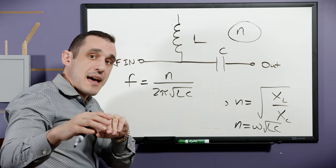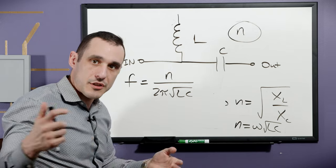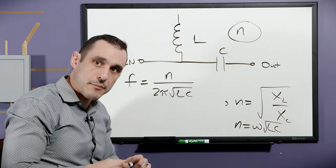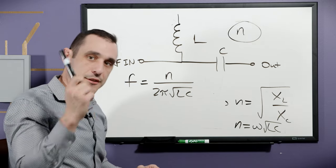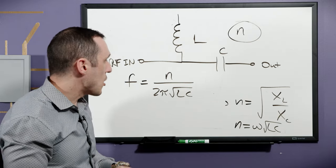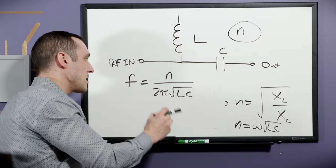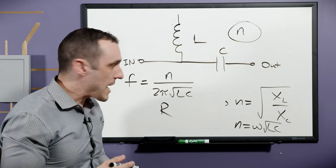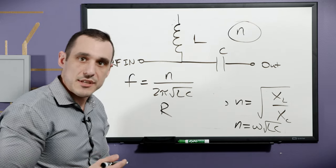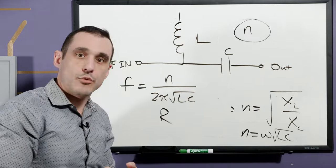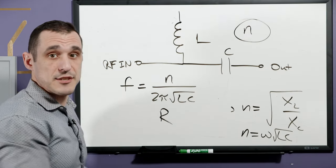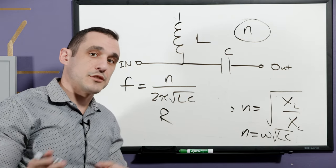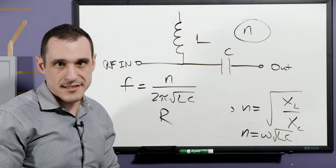To help you work through all this math, I created a calculator application on the Altium blog — there is a link in the description. There's a free calculator you can access: just plug in your N, your target R value, and the frequency you're operating at, and it will output L and C values for your bias T. To verify this, we need to do some simulation, so let's hop into Altium Designer and I'll show you how to do a SPICE simulation for a bias T.